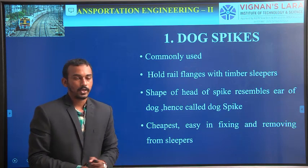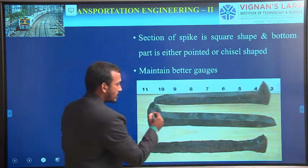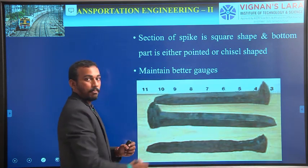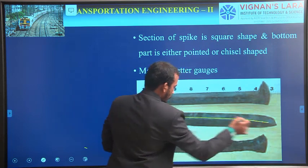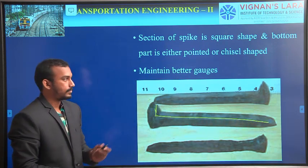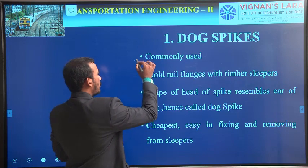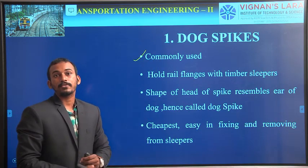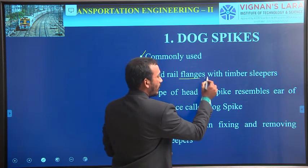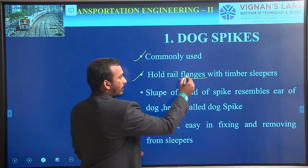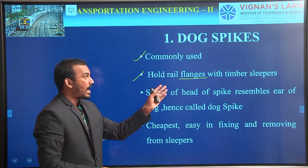The first type is dog spikes. Dog spike means this is a dog spike — it is nothing but a nail, but it has an offset head. These are the most commonly used type of spikes. The second point is they hold rail flanges with the timber sleepers. Flange means nothing but a flat-footed rail.